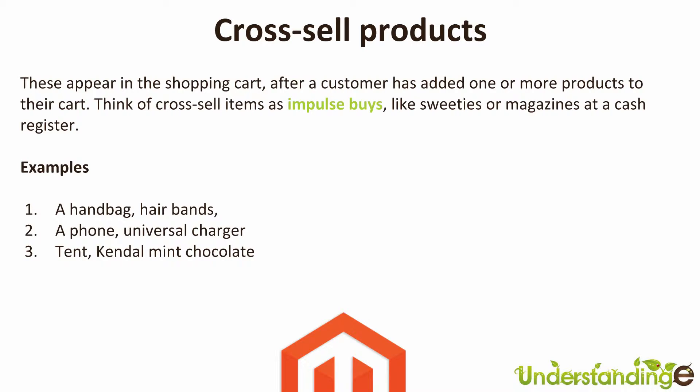Using the same three examples: if your customer puts a handbag into their cart, show them hair bands or other hair accessories as great add-on items. The add-on items are typically much cheaper than the product being purchased but make sense alongside it. For a phone, a universal charger or cheap headphones. For a tent, some Kendal Mint Cake — small items that increase the basket spend as an impulse, no-brainer buy, raising your average order value.